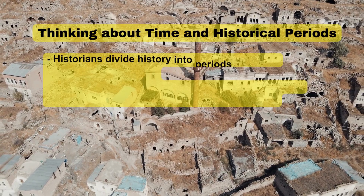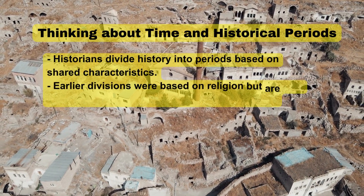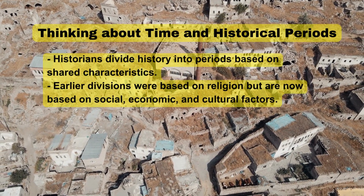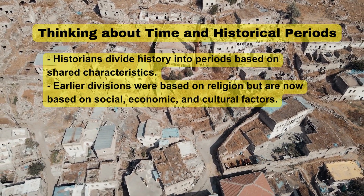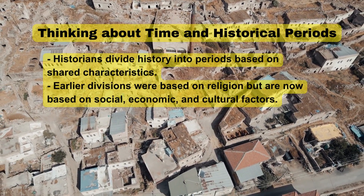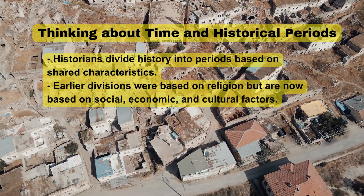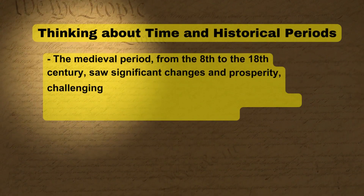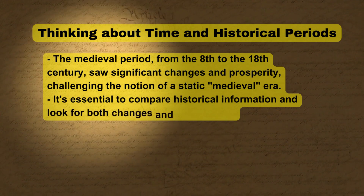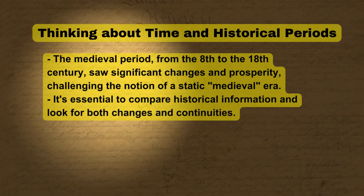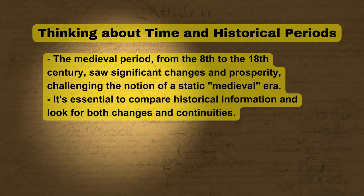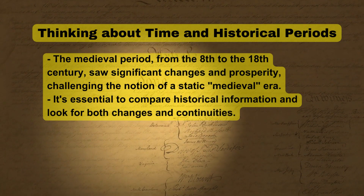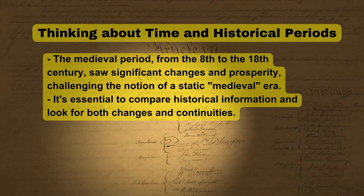Thinking about time and historical periods: Historians divide history into periods based on shared characteristics. Earlier divisions were based on religion but are now based on social, economic, and cultural factors. The medieval period, from the 8th to the 18th century, saw significant changes in prosperity, challenging the notion of a static medieval era. It's essential to compare historical information and look for both changes and continuities.